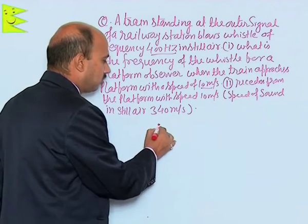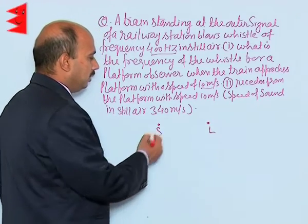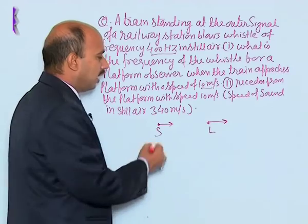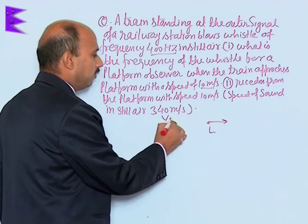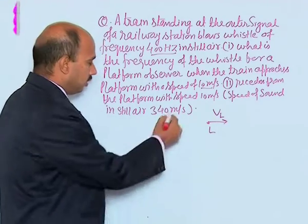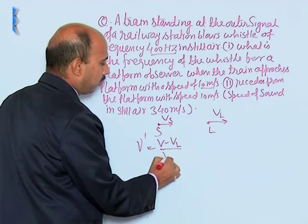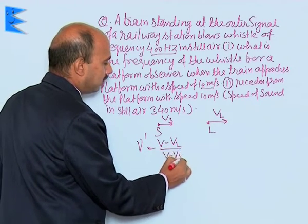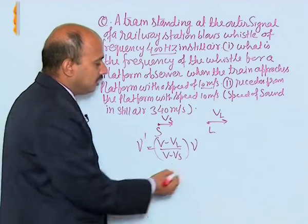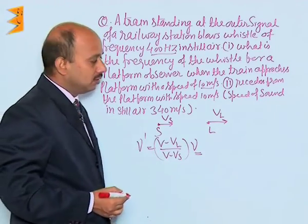There is a source and there is a listener. If the source is moving to one side with speed Vs and the listener is moving with speed Vl, then we write the apparent frequency as nu dash equals V minus Vl upon V minus Vs, multiplied by nu. This nu is the actual frequency, and nu dash is the apparent frequency heard by the listener.